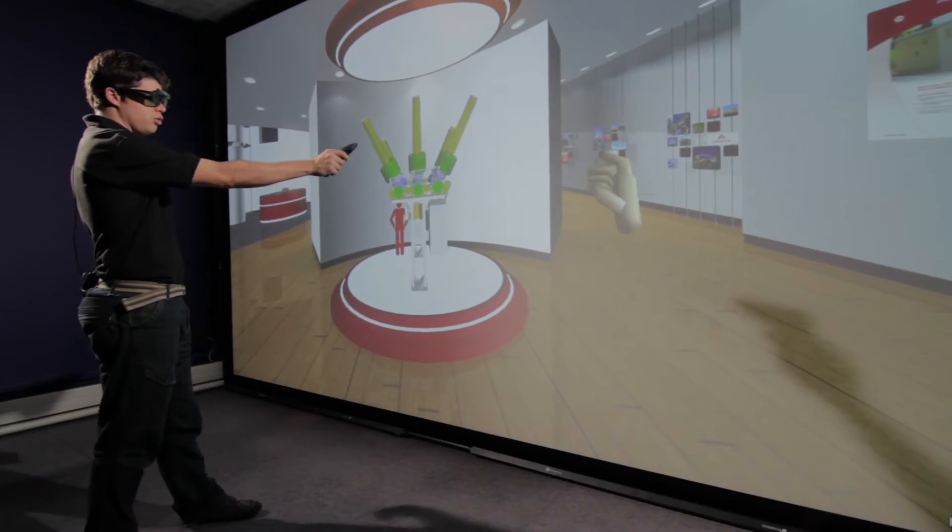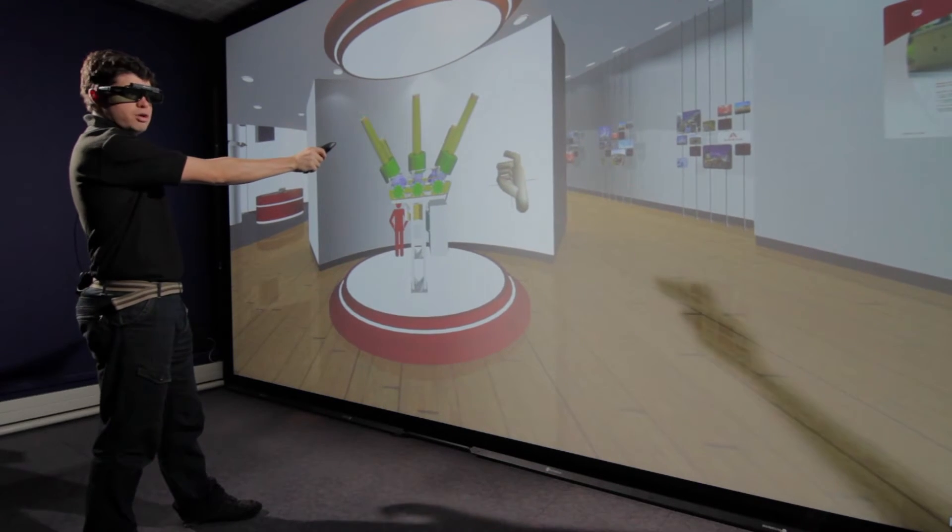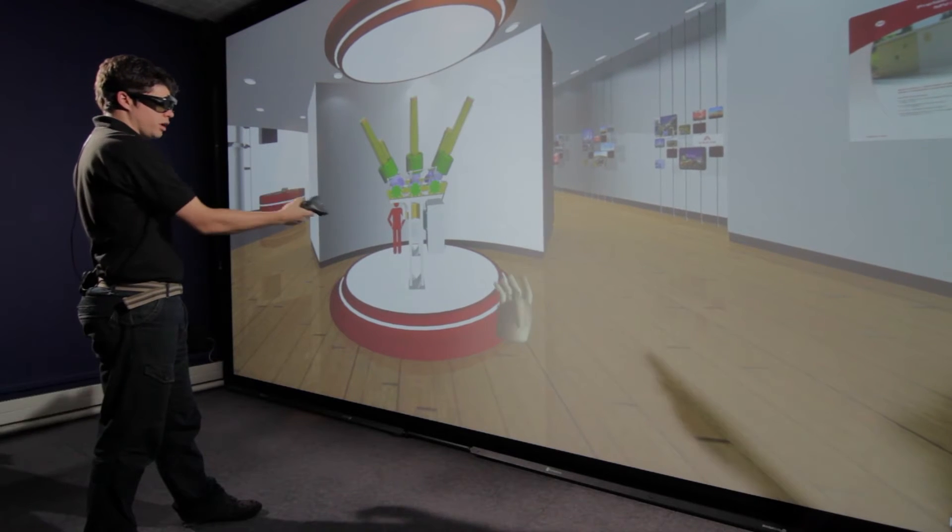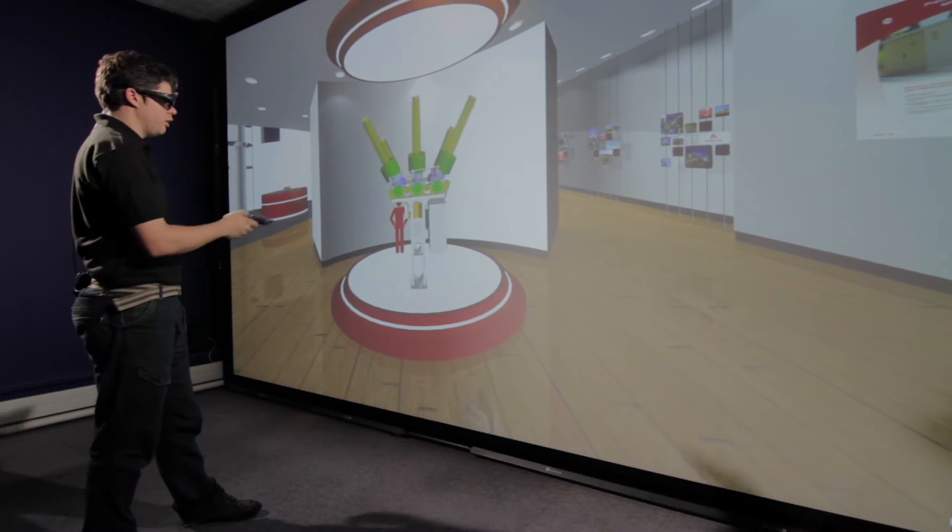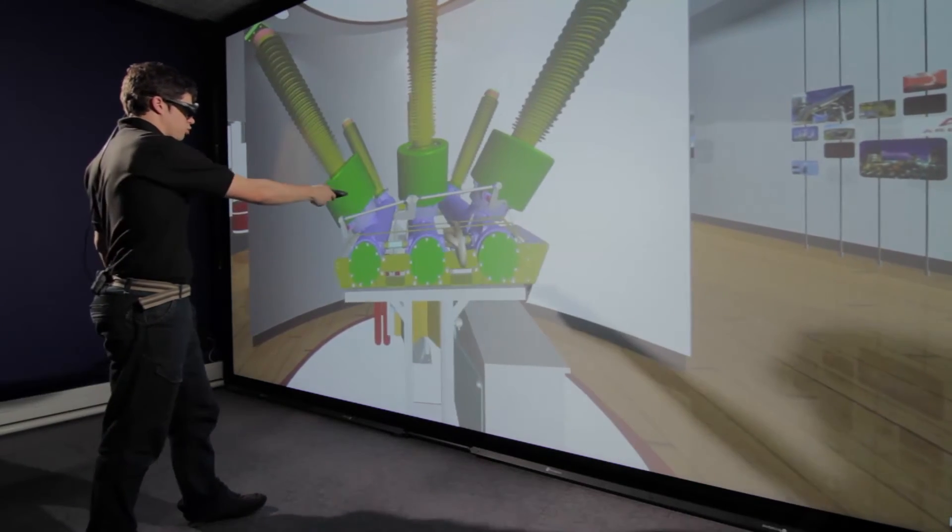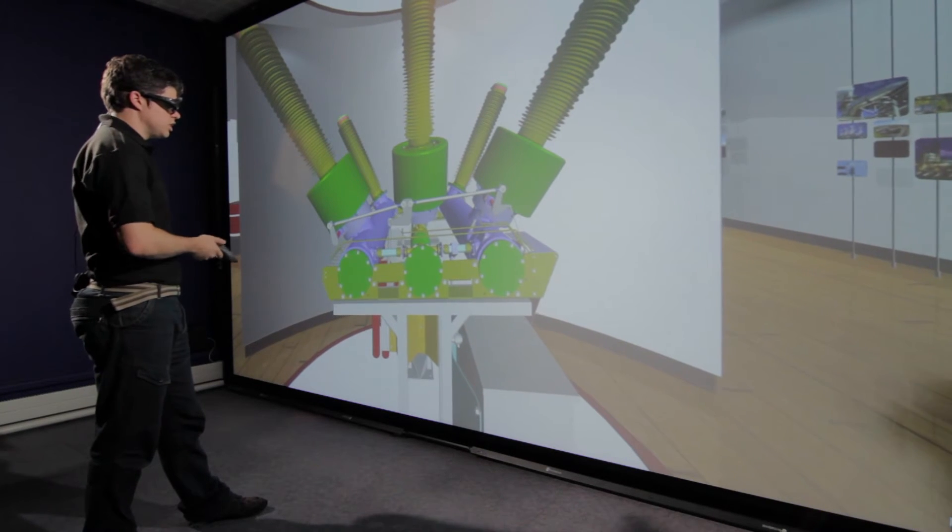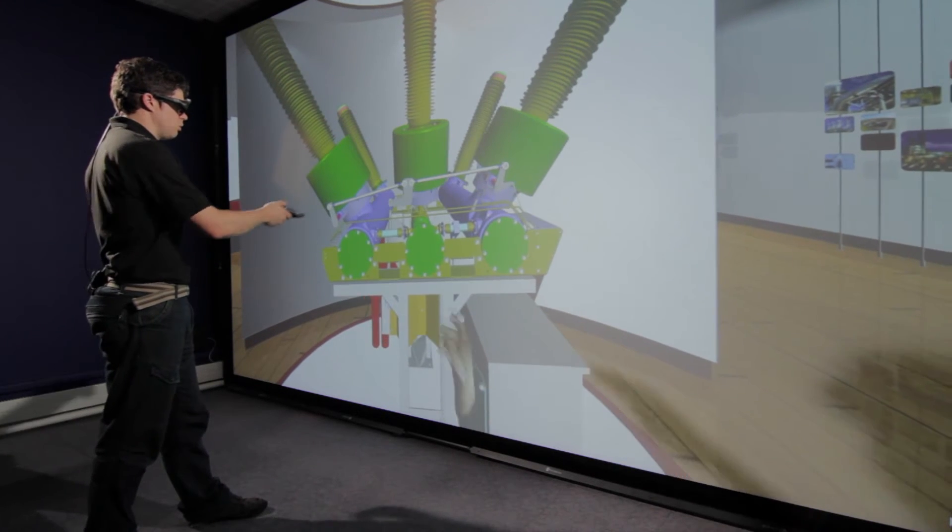The hand tracker tracks my hand movements, superimposing a virtual hand over my real hand. We have a navigation system as well that allows me to maneuver around the scene. This allows me to interact with components in the 3D scene for assembly, disassembly, and examination.